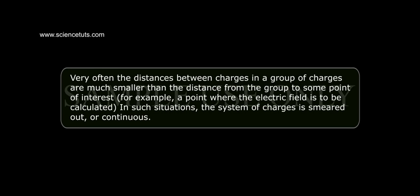Electric Field of a Continuous Charge Distribution. Very often, the distances between charges in a group of charges are much smaller than the distance from the group to some point of interest, for example, a point where the electric field is to be calculated. In such situations, the system of charges is smeared out or continuous.